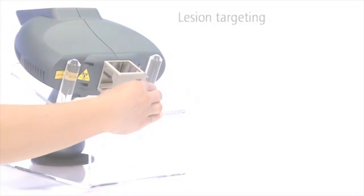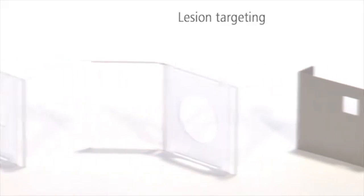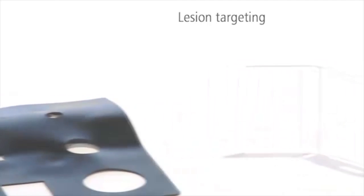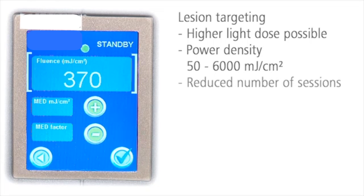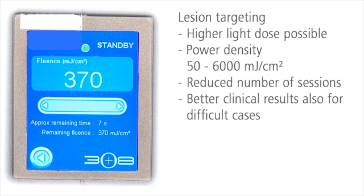Masks let you adapt the size and shape of the spot to smaller areas. Time-consuming irradiation of the full body is unnecessary. With the lesion targeting of the 308 Excimer System, you can apply a much higher dose of monochromatic UVB light. At the same time, you can reduce the total number of sessions required and improve clinical results visibly.